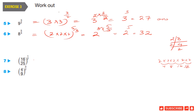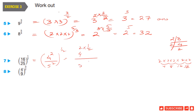Question 7: (16/25) power 1 by 2. 16 is the square of 4, and 25 is the square of 5, so we write 4 square upon 5 square, whole power 1 by 2. We open the bracket and apply the 1 by 2 power to 4 square and 5 square separately: 4 power 2 times 1 by 2, over 5 power 2 times 1 by 2. These cancel, giving 4 upon 5 as the answer.